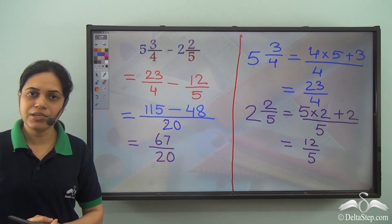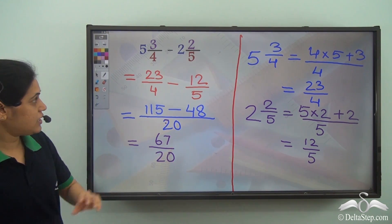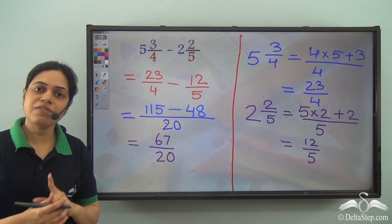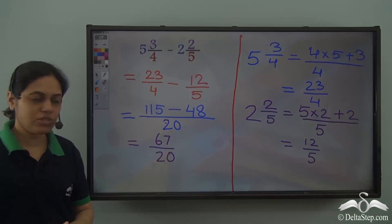115 minus 48 is 67 and I have 20 in the denominator. So 67 by 20. This is the answer of the subtraction. But since the question was given in terms of mixed fraction, I again need to convert this into mixed fraction.